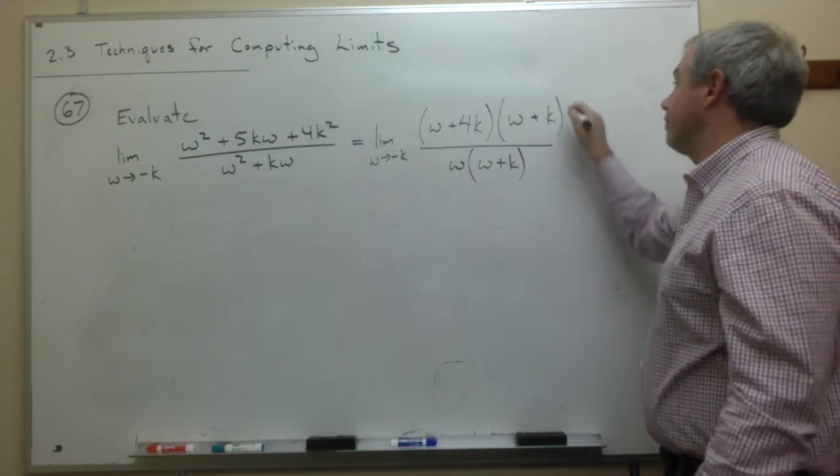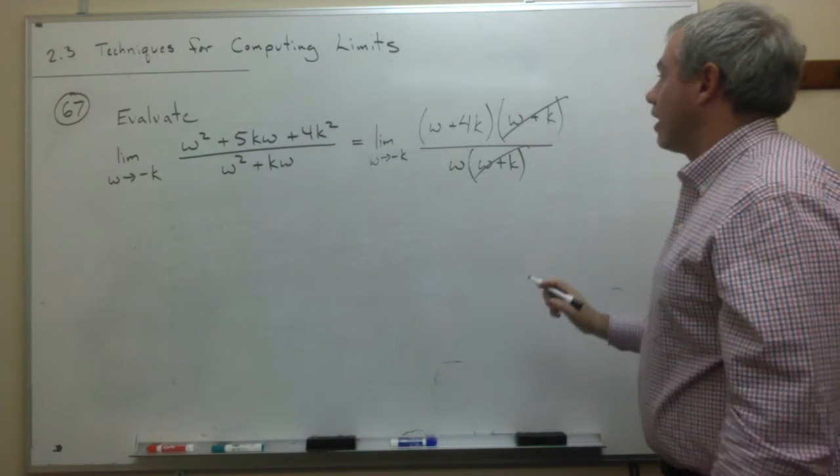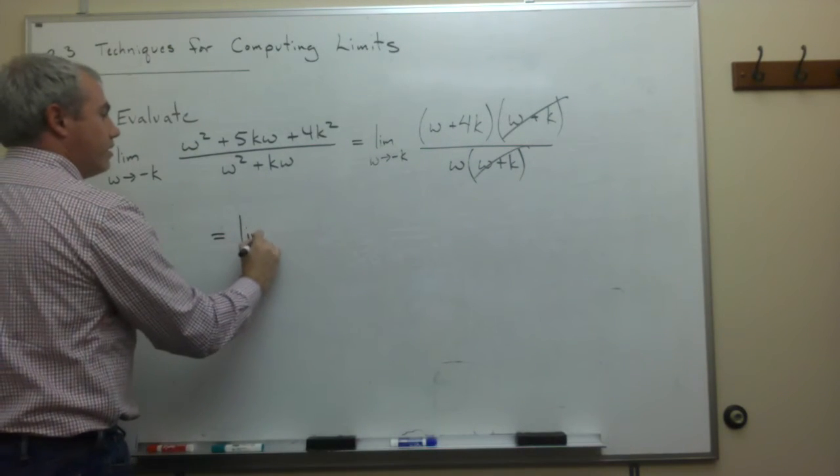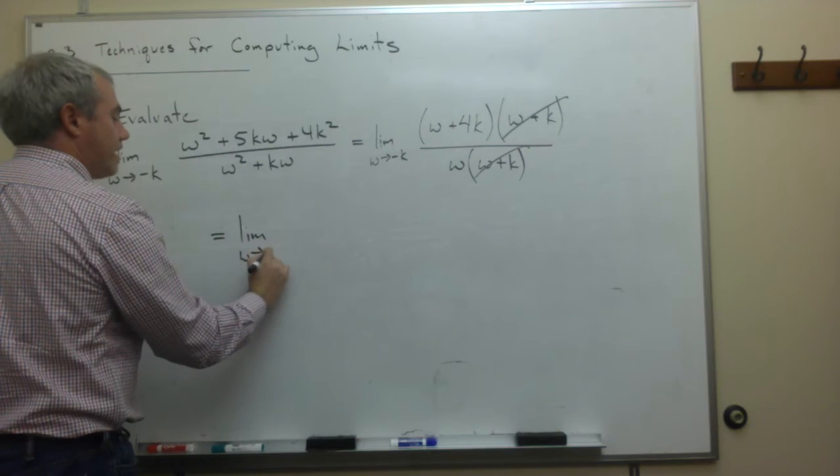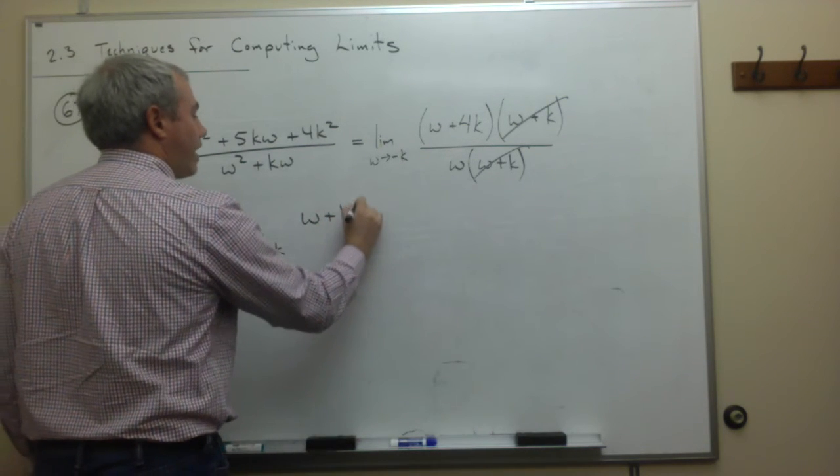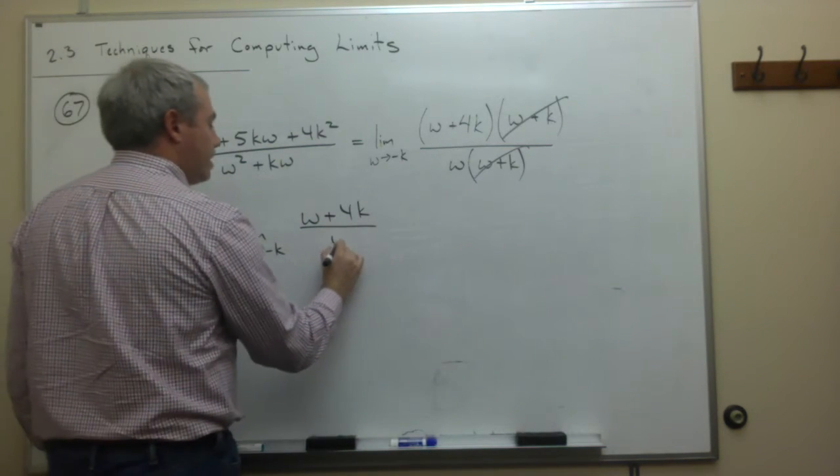Let's cancel the w plus k's. And what I'm left with is, this is equal to the limit as w goes to negative k of w plus 4k divided by w.